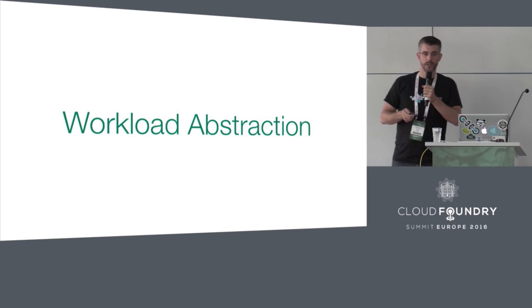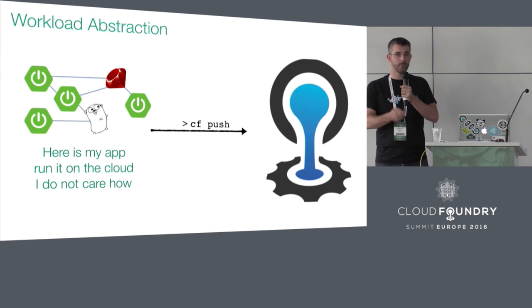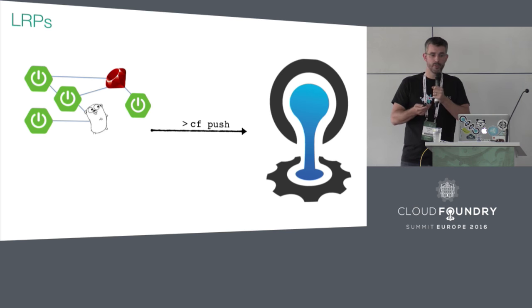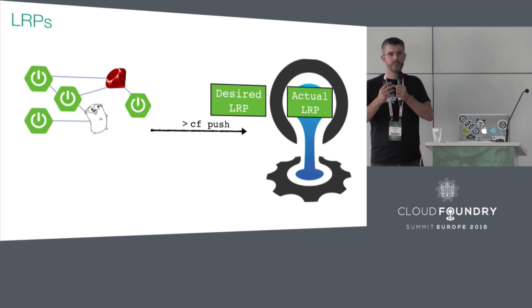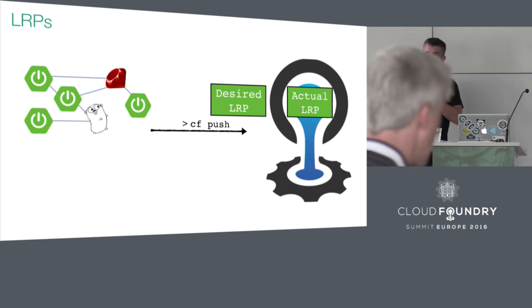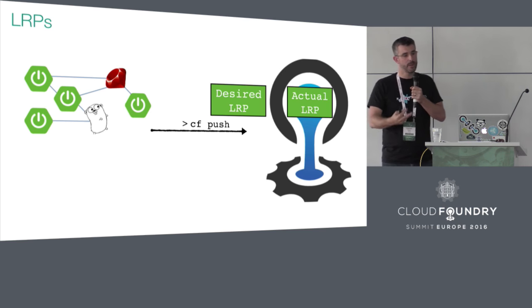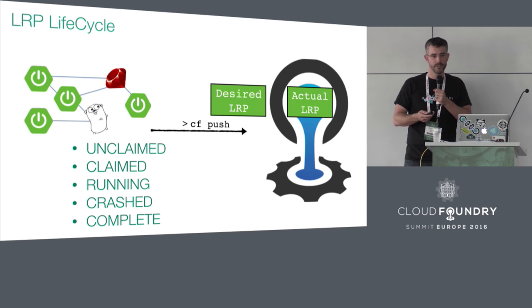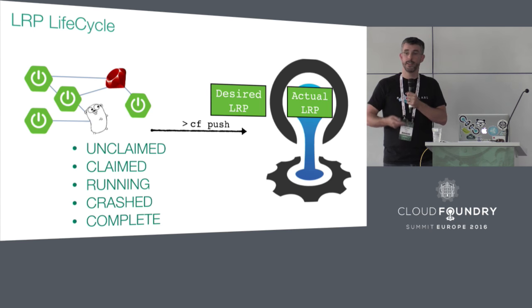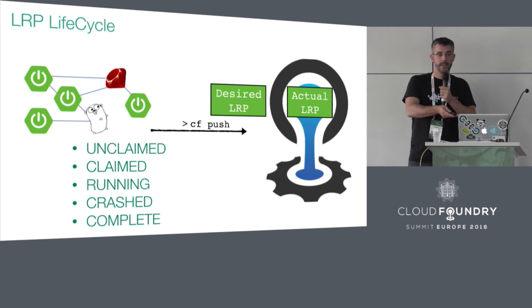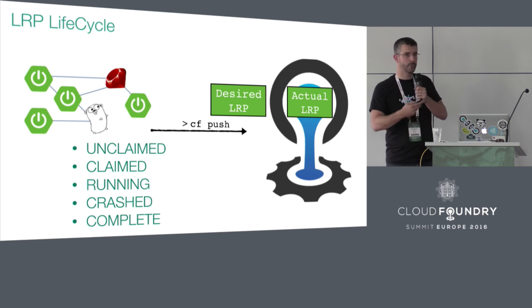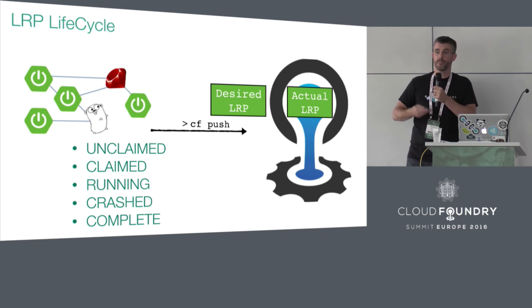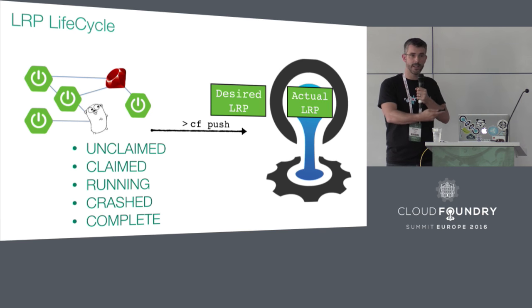The second abstraction is workload abstraction. Most people know that Cloud Foundry has moved beyond just supporting applications to the more generic concept of long running processes and tasks. A long running process is Diego's view of your application — it's desired to just keep on running. Diego has a conceptual view of a desired LRP and an actual process running in a container known as your actual LRP. If you scale that process, you can have multiple actual LRPs. LRPs have a lifecycle, and these lifecycle states map to the behavior you'd expect. If you see your application in unclaimed state, it could mean you haven't provisioned enough resources for your cells.